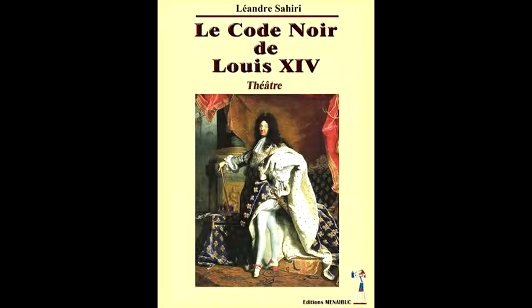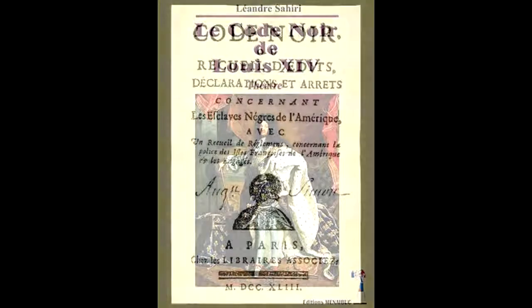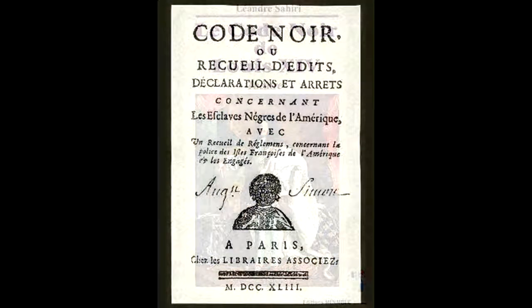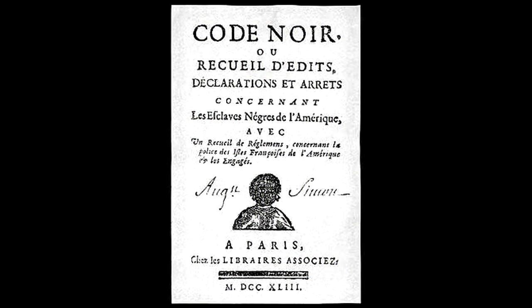And then Louis XIV, King of France, he also brought out the Code Noir, which is basically the same thing as the Black Codes that were implemented in the American South.